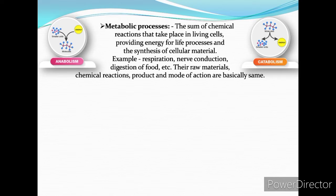Metabolic processes are the sum of chemical reactions that take place in living cells, providing energy for life processes and synthesis of cellular material. They can be divided into catabolism and anabolism, respiration, nerve conduction, and digestion of food. Their raw materials, chemical reactions, products, and modes of action are basically similar in different organisms. In different types of organisms, similar structural and functional biomolecules are found, making this important evidence for evolution.